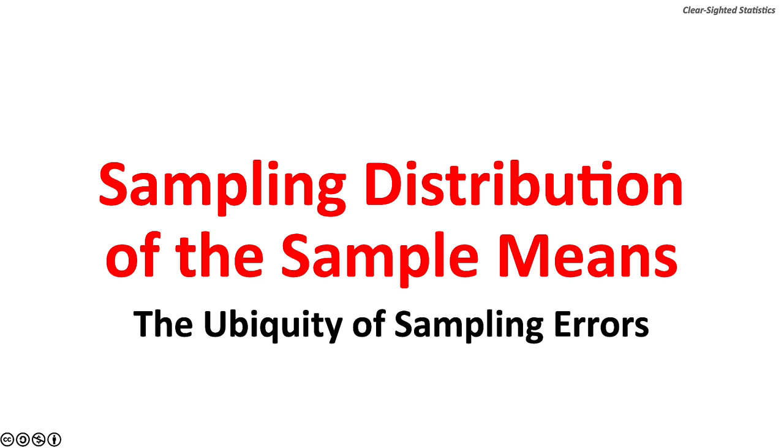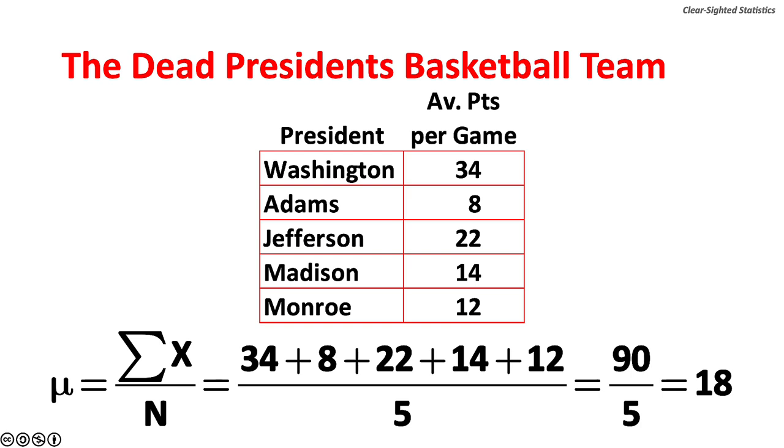Let's review the sampling distribution of the sample means. We shall see that sampling error is widespread, and it is not the result of human mistakes. In an alternate universe,